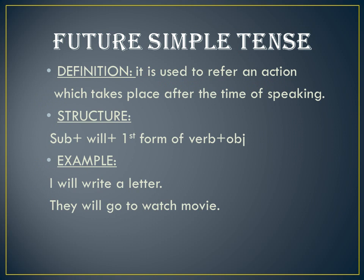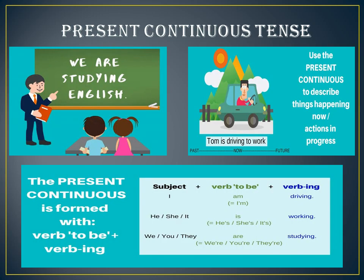Moving towards the future simple tense, which is used to refer to an action that will take place after the time of speaking. The structure is: subject + will + verb first form + object. Examples: 'I will write a letter,' 'They will go to watch a movie.' This is a simple tense in which you use the first form of the verb along with 'will.'